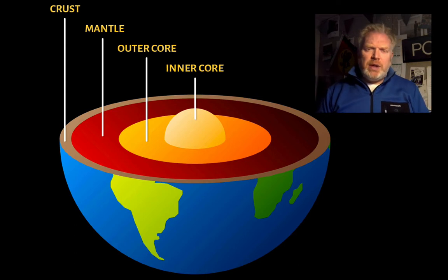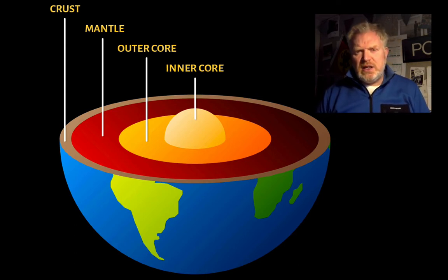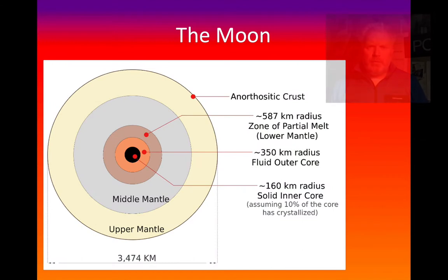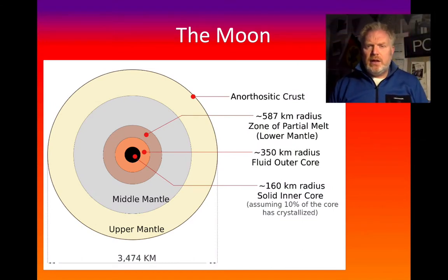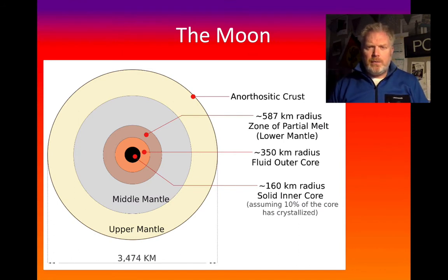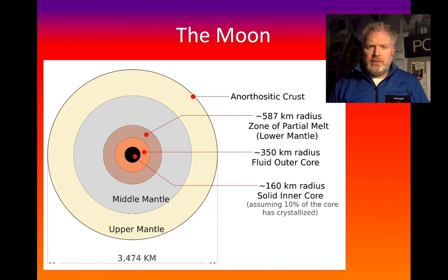When we look at other planets we can start to see some similarities and some differences. The first of these we need to look at is the Moon. When we start looking at how the Moon forms, we'll see that the Moon is actually a bit of the Earth that got knocked out into space. So we'd expect there to be some fairly significant similarities between the Moon and our own planet. Can you identify what they are?